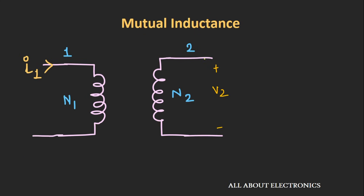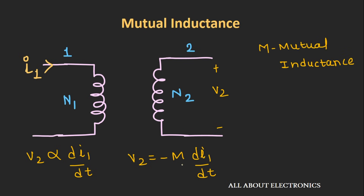The voltage generated in coil 2 is proportional to the rate of change of current in coil 1. So we can write V2 = -M × di1/dt, where M is the mutual inductance between the two coils. The negative sign implies that the voltage generated in coil 2 opposes the rate of change of current. The unit of mutual inductance is the same as self inductance, that is Henry. Let's call this equation number 4.